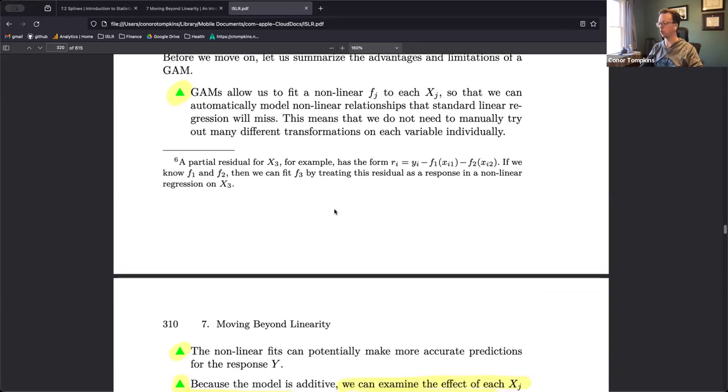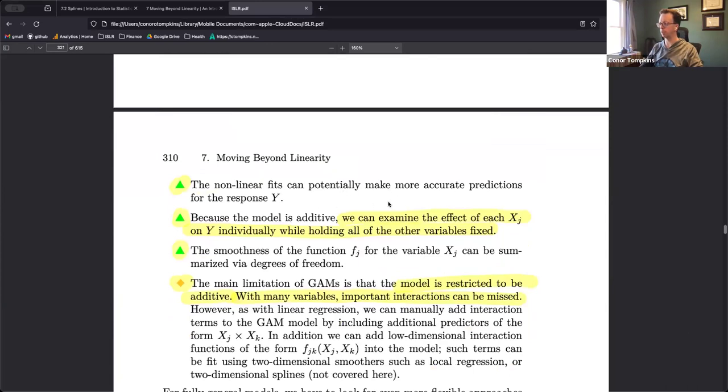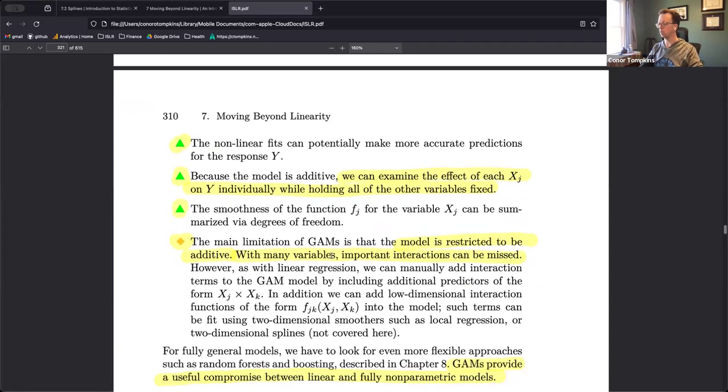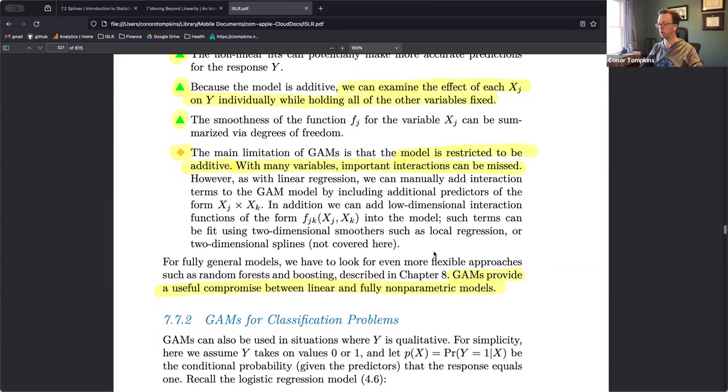We can automatically model these non-linear relationships with GAMs. We don't need to try out every single possibility or possible way to transform the inputs. There's potential for upside in terms of accuracy. And because it's additive, we can still look at the effect of each input on the target variable while holding those other ones constant. We look at degrees of freedom, that's how we summarize the smoothness of each function.